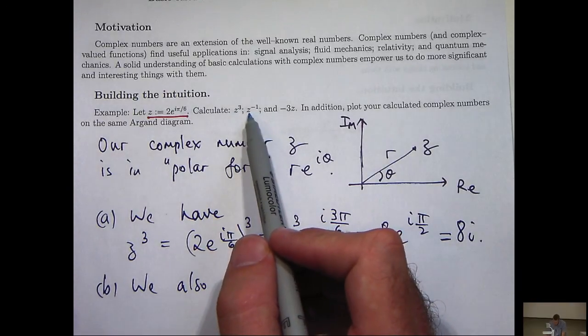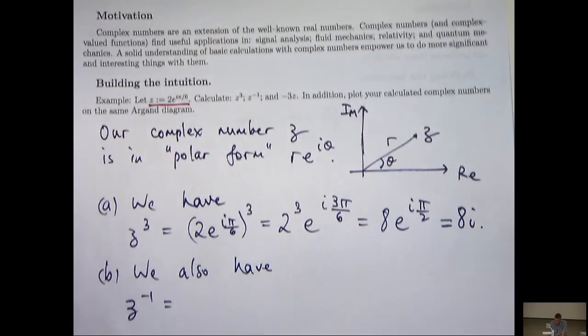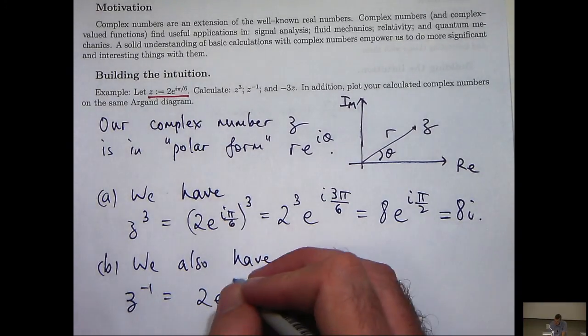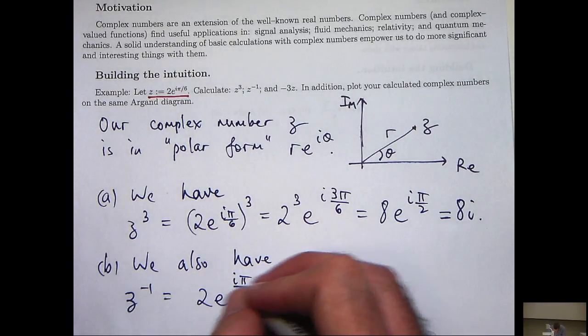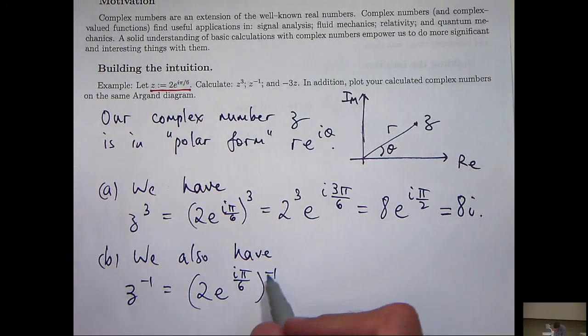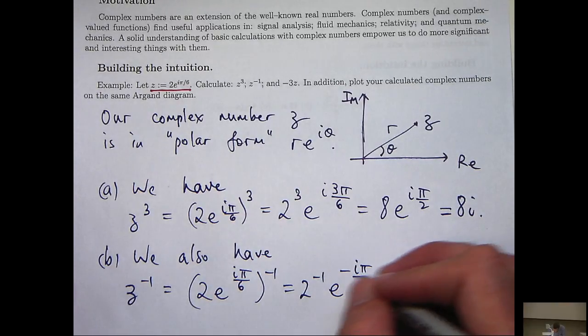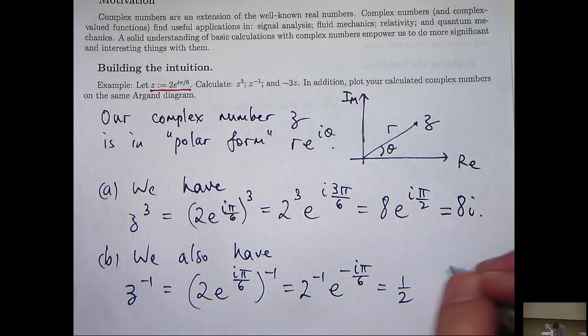So let's get on to our second calculation, z^(-1). Well, again, using our polar form, the calculations will simplify really easily. So again, the index laws are applied and just a simplification is involved.